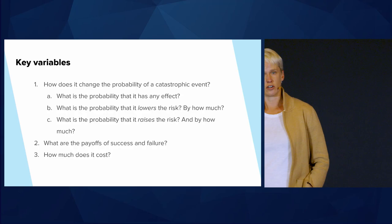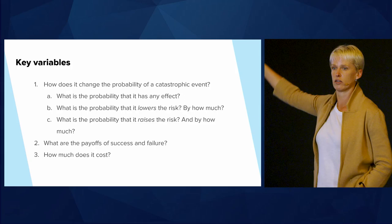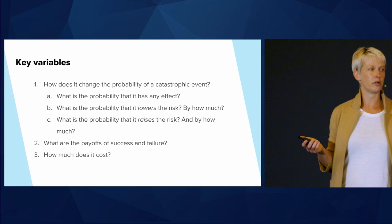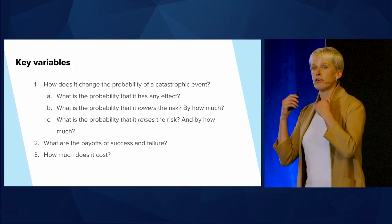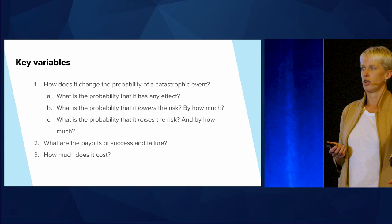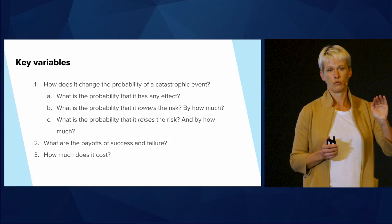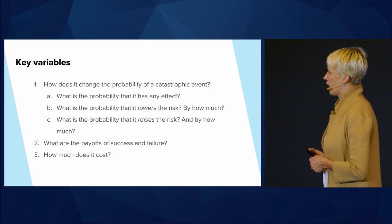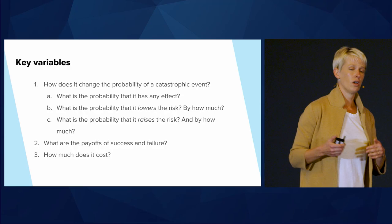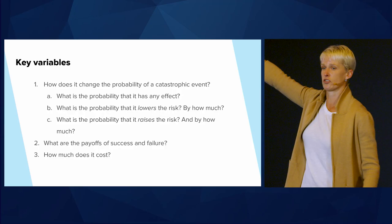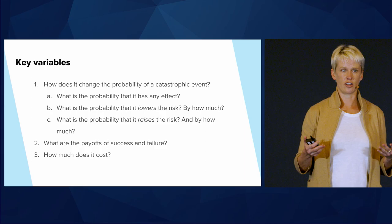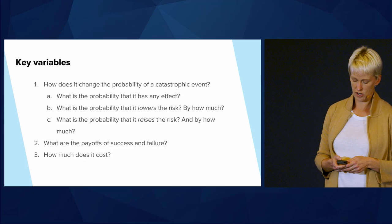Here are the key variables. We can decompose the change in the probability of a catastrophic event into: first, the probability that our action has any effect on global catastrophic risk at all; second, given that we have some effect, the probability that we've lowered the risk and by how much; and third, the probability that our action backfired and made a catastrophic event more likely. What are the payoffs of success and failure? And how much do these actions cost? The first project I'll present focuses on how much changing the probability of an existential risk matters, making some simplifying assumptions to hone in on that.